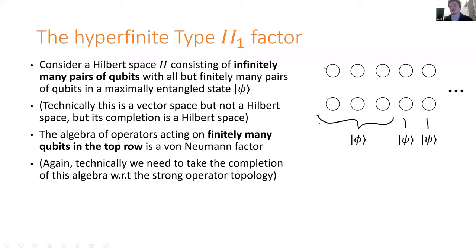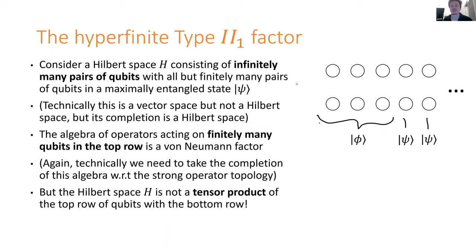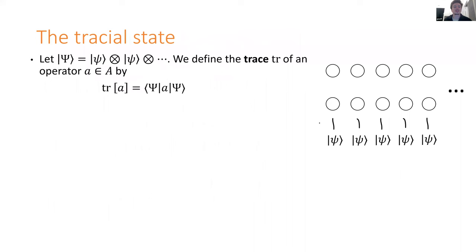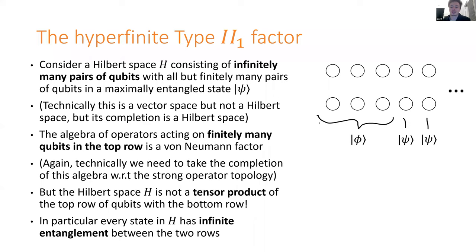This is trivially a factor because any non-trivial operator acting on finitely many qubits in the top row fails to commute with something. However, the Hilbert space H is very definitely not a tensor product of a Hilbert space of the top row qubits with a Hilbert space of the bottom row qubits, because every state in this Hilbert space has infinitely many maximally entangled pairs. There are no product states. So this is a new type of von Neumann algebra, called a type II₁ factor.